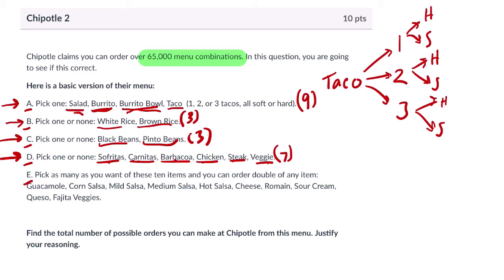Now E says pick as many as you want of these 10 items, and you can order double of any item. So now if it was just one of each item, that tells me there would be two choices for each. Guacamole, yes or no. Corn salsa, yes or no. Mild salsa, yes or no. And you say yes or no for each of these categories, and that's essentially 10 yes or no's. That's two to the 10th. Two choices ten times. And it does take into account no toppings at all, because if you said no every time, that's no toppings.